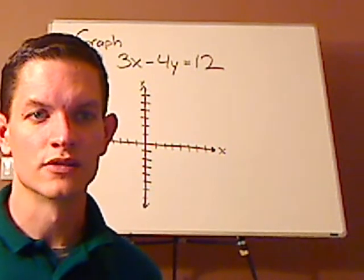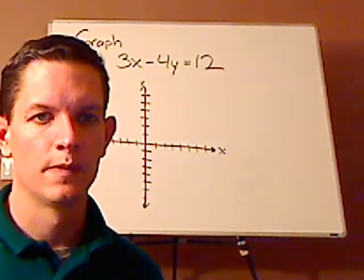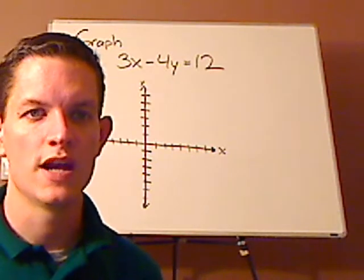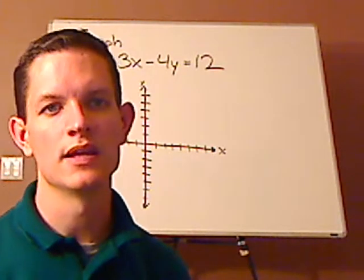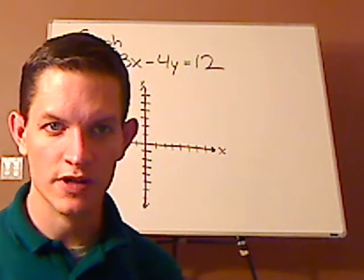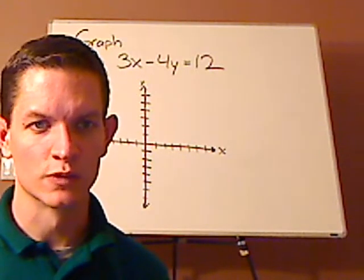This is yet another line to graph. The equation is 3x minus 4y equals 12. Pause the video and see if you can try to do this one on your own.